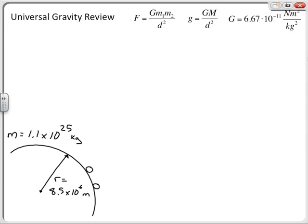The first object is a person that is 100 kilograms, and we also have another object — perhaps a vehicle — that is 1200 kilograms. These two objects are going to be separated by three meters. So I've identified three different objects in this problem: the massive planet with a given radius and mass, and the two smaller objects separated by three meters, both resting at the surface of the planet.